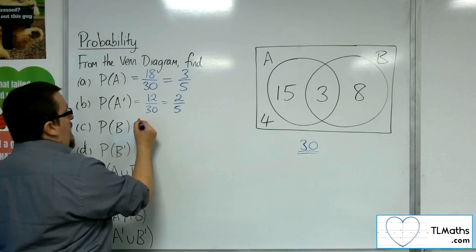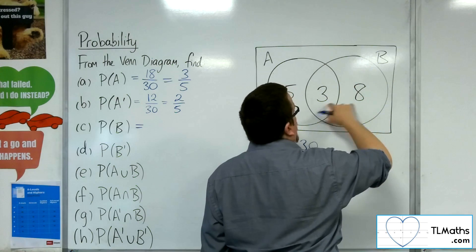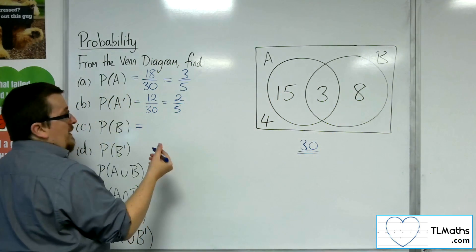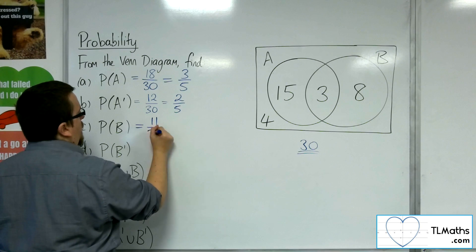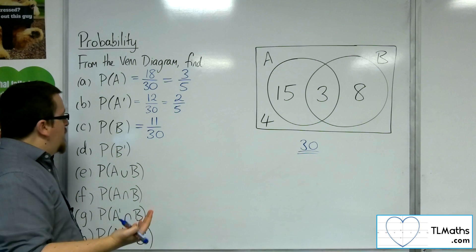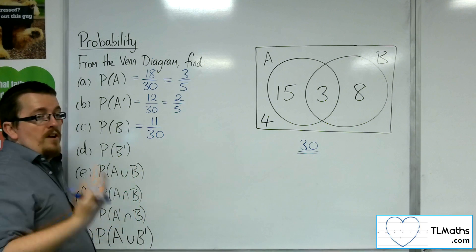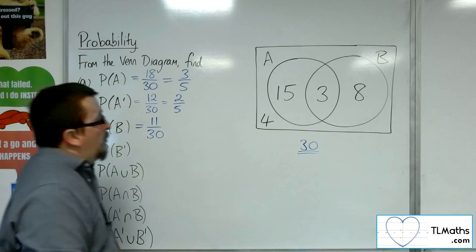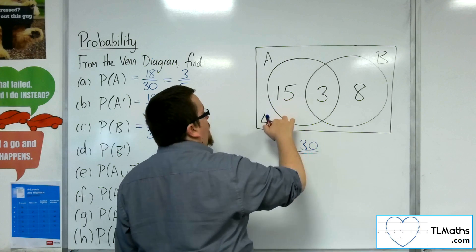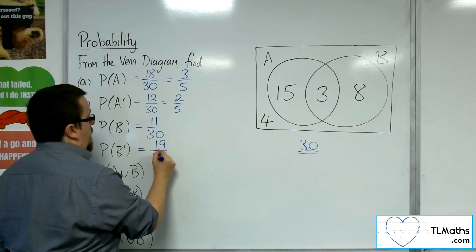As for the probability of B, the circle of B has 3 and 8, so that's 11 for B — 11 out of 30. That can't be simplified, so moving on to the probability of not B: not B would be 1 take away 11 over 30, so 19 out of 30. You could also see it as anything outside of that circle — the 15 and the 4 — so 19 out of 30.